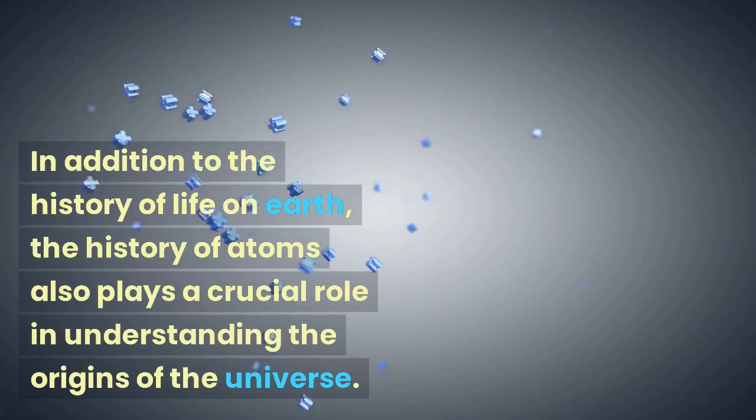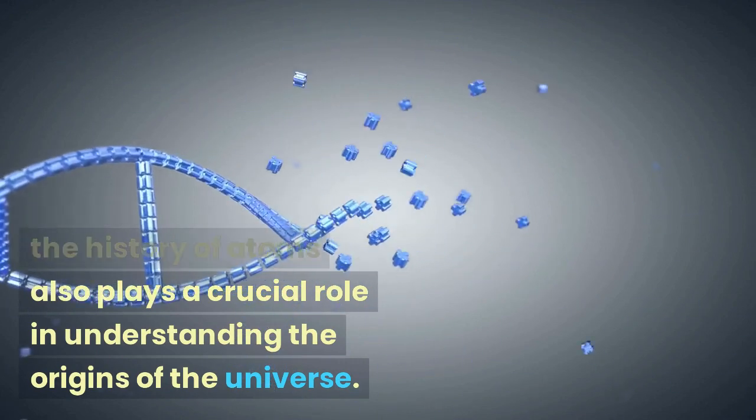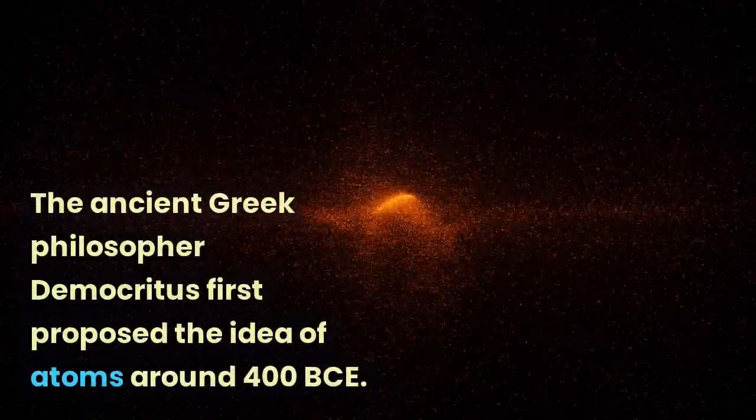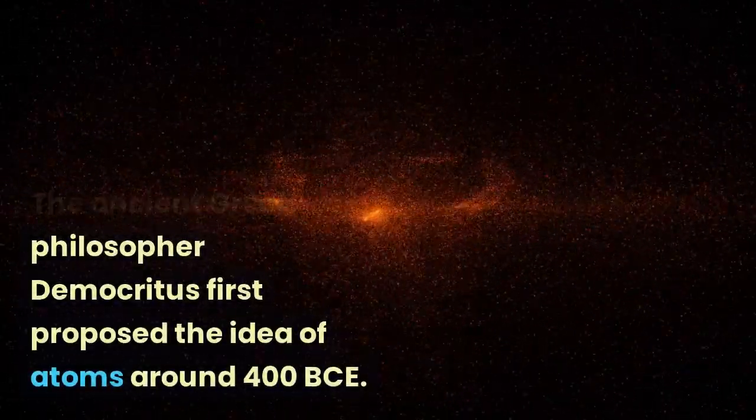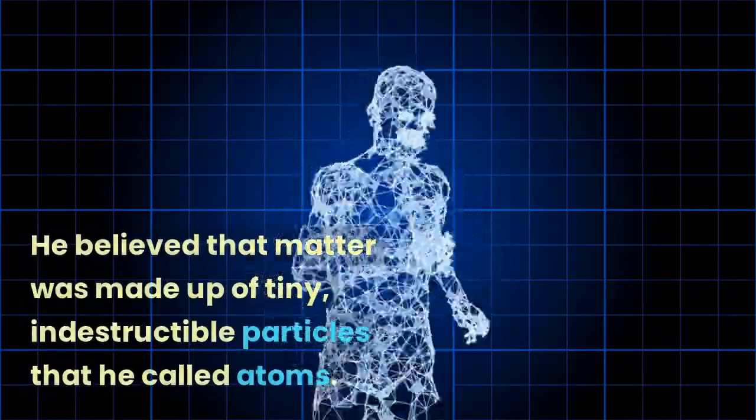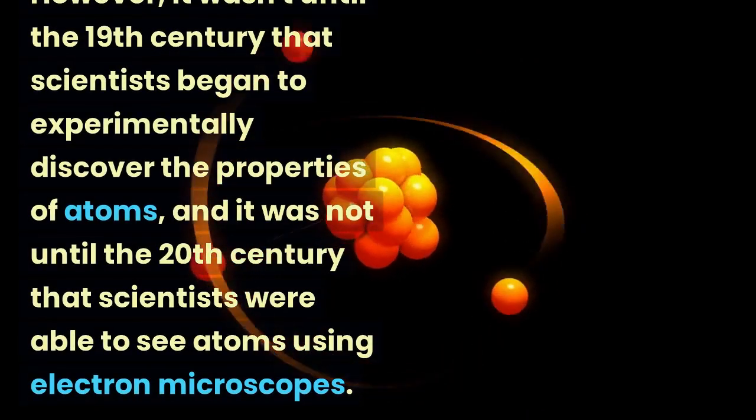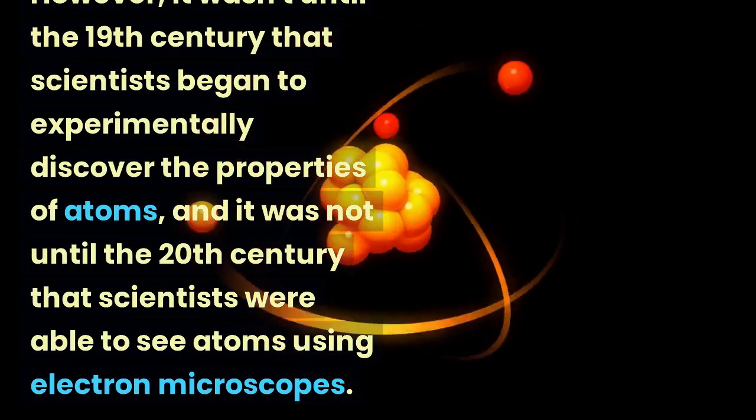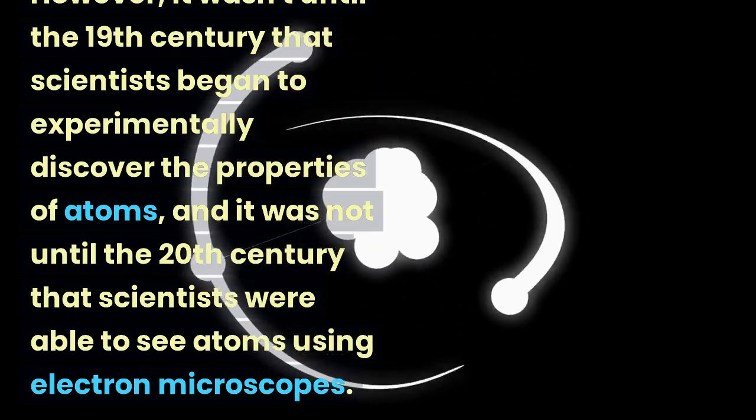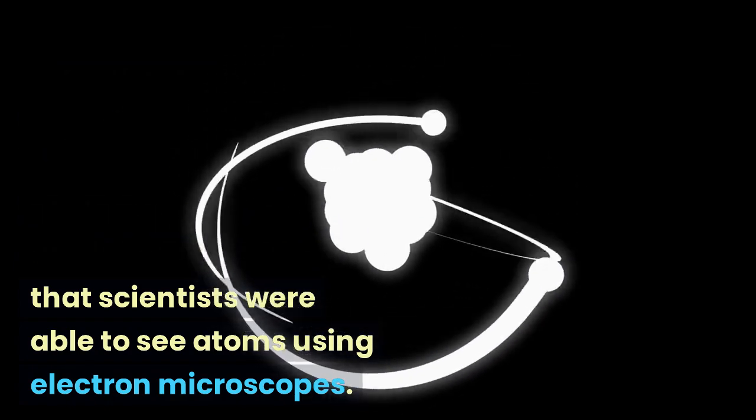In addition to the history of life on Earth, the history of atoms also plays a crucial role in understanding the origins of the universe. The ancient Greek philosopher Democritus first proposed the idea of atoms around 400 BCE. He believed that matter was made up of tiny, indestructible particles that he called atoms. However, it wasn't until the 19th century that scientists began to experimentally discover the properties of atoms, and not until the 20th century that scientists were able to see atoms using electron microscopes.